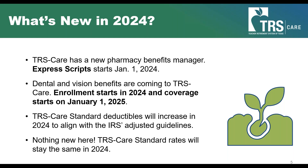TRS Care Standard deductibles will increase in 2024 to align with IRS adjusted guidelines, which will allow you to continue contributing to and using a health savings account. The deductible for TRS Care Standard hasn't changed since 2018. Current deductibles are too low for TRS Care Standard to be compatible with a health savings account in 2024 — that's why they're going up. The individual in-network deductible is going up by $100. TRS Care Standard rates will stay the same; you won't see a change in your premium for the 2024 plan year.